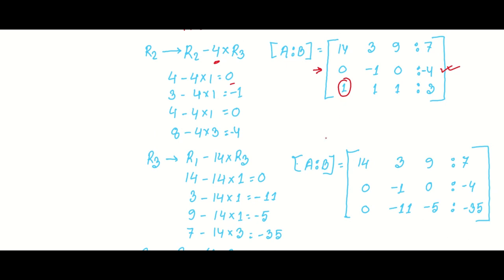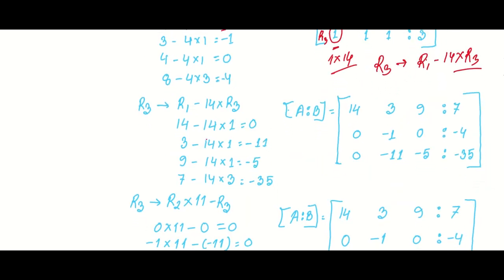Next, for R3 minus a multiple of R1: the value is 3 minus 4 into 1, that is minus 1; then 4 minus 4 into 1 is 0; and 8 minus 4 into 3 gives minus 4. For R3 with ratio 14, the operation is R3 minus (14 into R2): first value is 0, then 3 minus 14 into 1 equals minus 11, then 9 minus 14 into 1 equals minus 5, and 7 minus 14 into 3 equals minus 35.